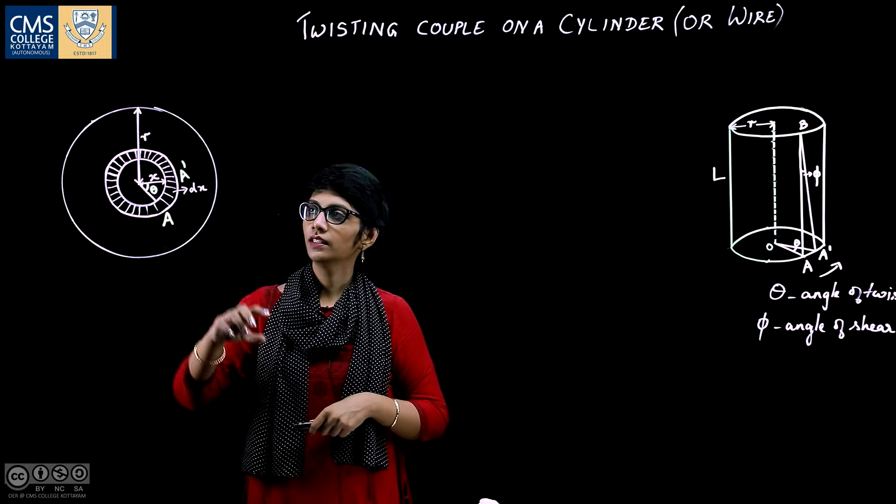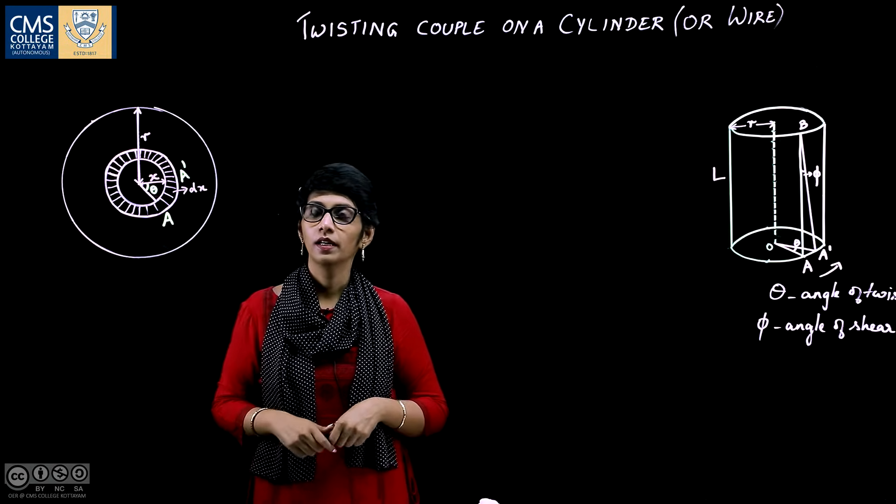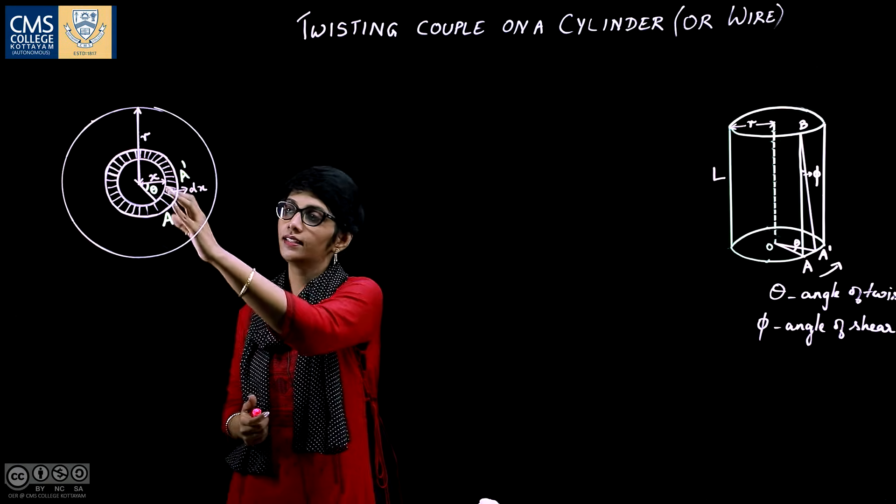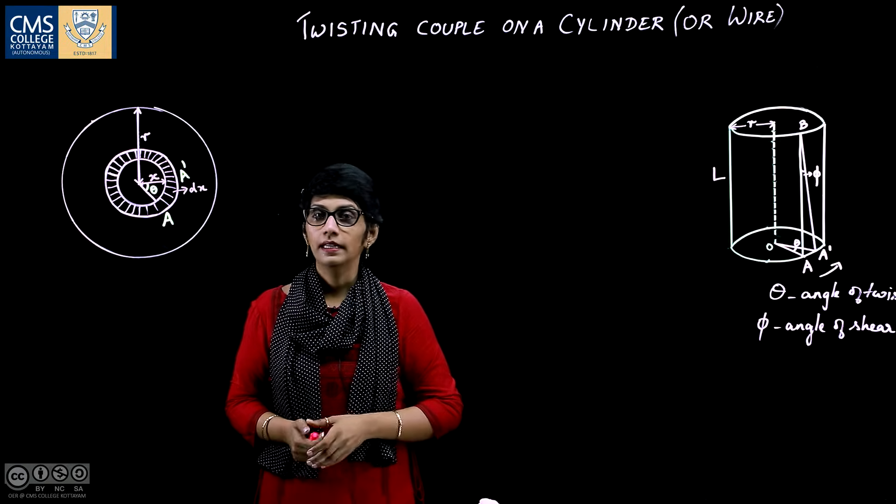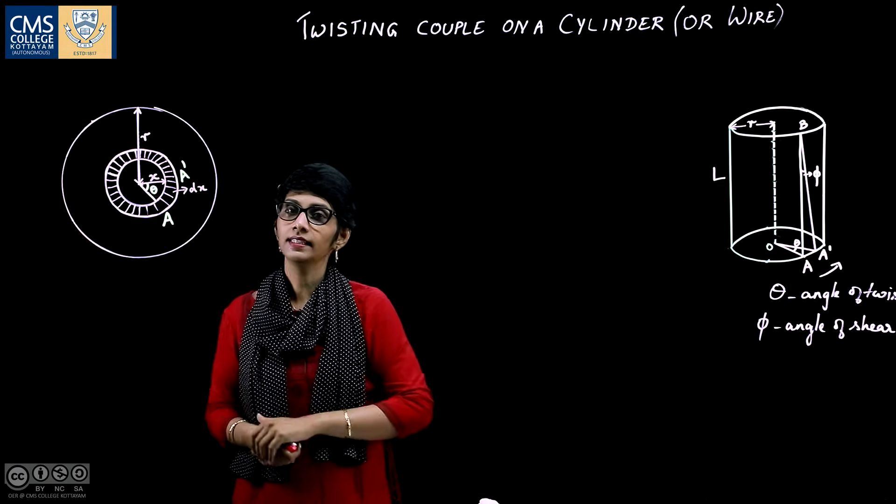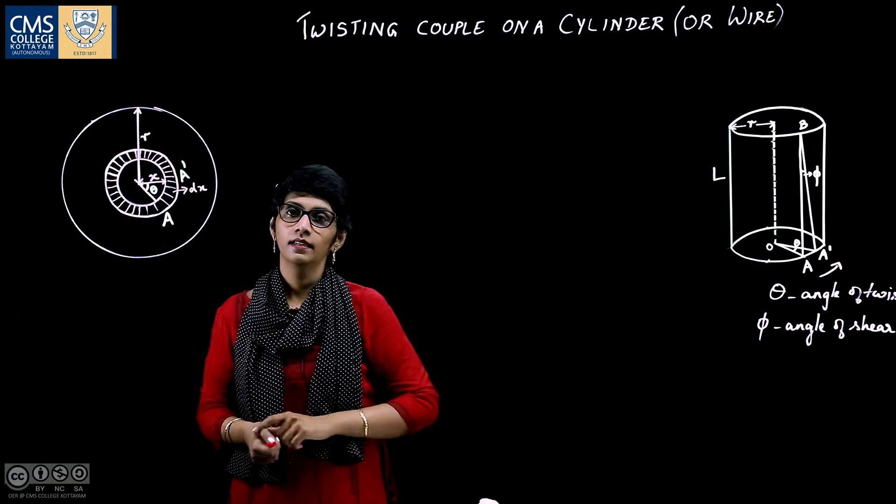Now imagine the cylinder to be made up of a number of hollow coaxial cylinders which are kept one inside the other. Let us take one such hollow cylinder having radius x and thickness dx.